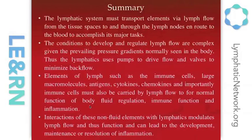In summary: the lymphatic system must transport elements via lymph flow from tissue spaces to and through lymph nodes en route to blood to accomplish all its major tasks. The conditions to develop and regulate lymph flow are very complex. Given prevailing pressure gradients, lymphatics must use pumps to overcome these gradients and drive flow, with efficient valves to minimize backflow. Elements of lymph — immune cells, large macromolecules, antigens, cytokines, chemokines, and those related to inflammation — must also be carried by lymph flow for normal body fluid regulation, immune function, and inflammation. Interactions of these non-fluid elements with lymphatics can modulate lymph flow and thus lead to the development, maintenance, or resolution of inflammation.